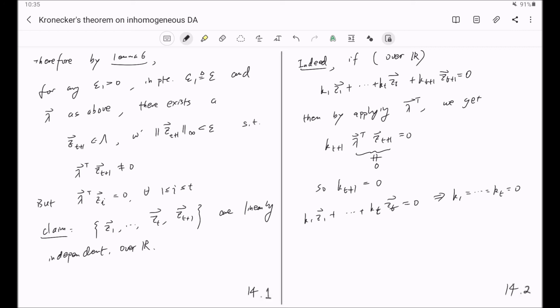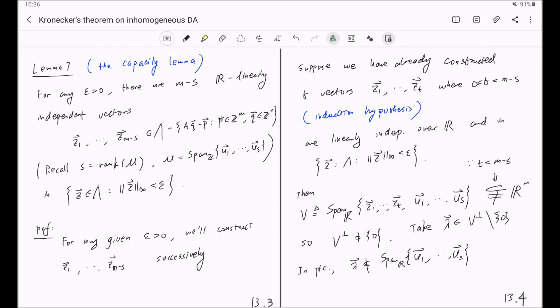And that, together with the fact that ZT plus 1 has a norm less than epsilon, as well as our induction hypothesis saying that Z1 through ZT are not only linearly independent but also inside this ball of radius epsilon. So those all together gives us the result for the case T plus 1.